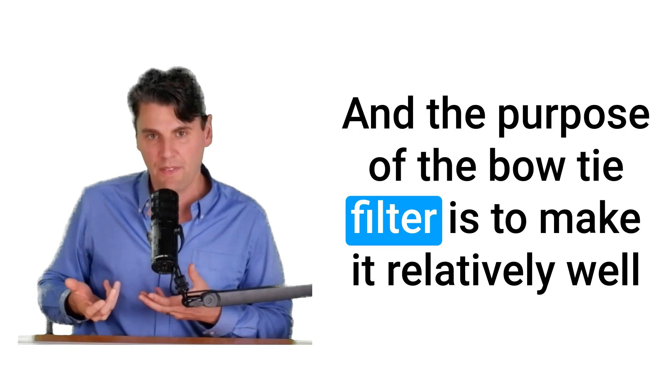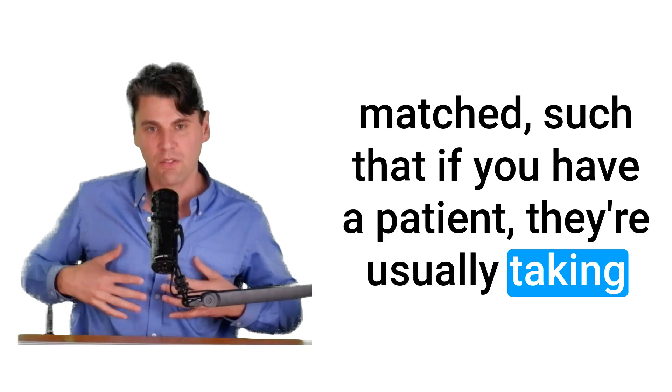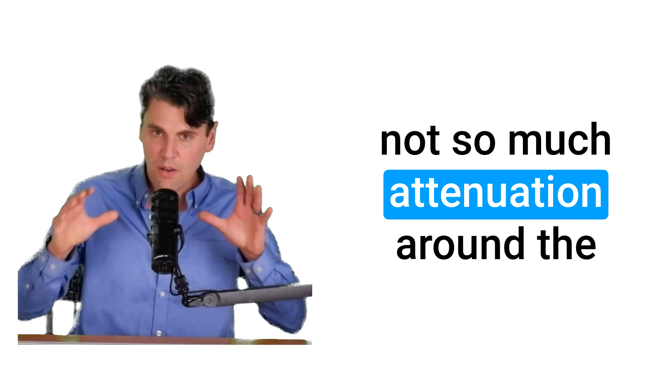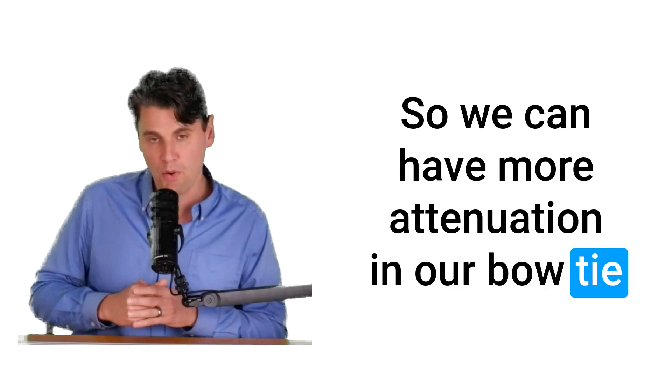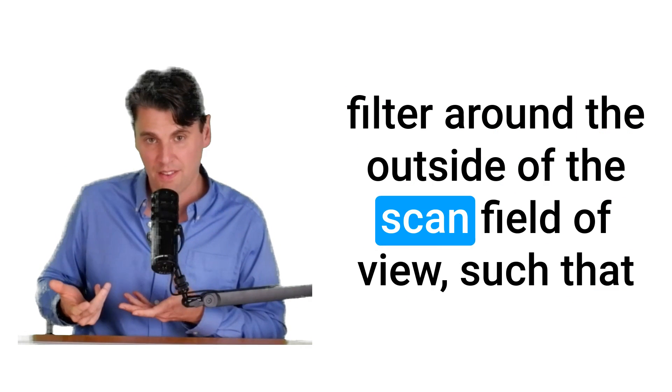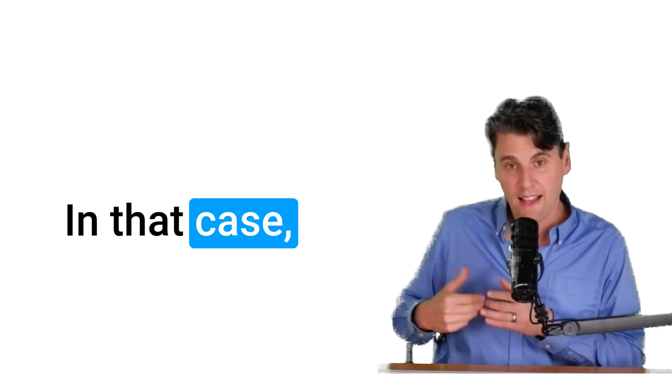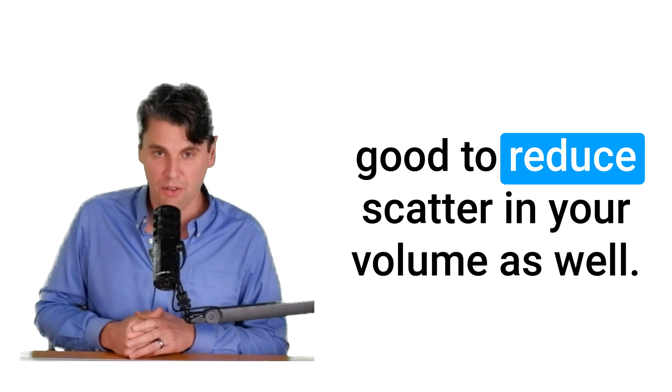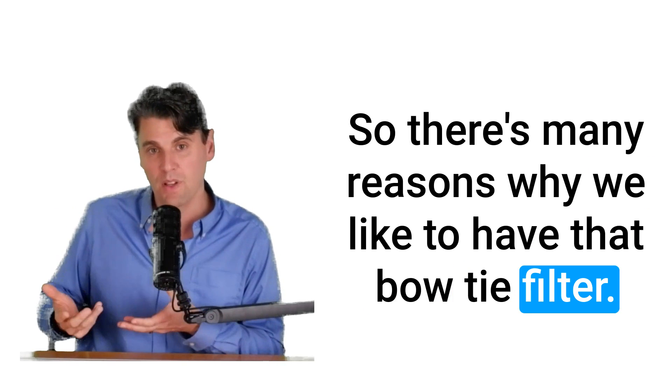And the purpose of the bowtie filter is to make it relatively well matched such that if you have a patient, they're usually taking up the middle of that scan field of view and not so much attenuation around the outside of the scan field of view. So we can have more attenuation in our bowtie filter around the outside of the scan field of view, such that we'll get a more similar fluence on the detector. In that case, you would need a lower dynamic range on your detector. Attenuating those extra rays also can be good to reduce scatter in your volume as well. So there's many reasons why we like to have that bowtie filter.